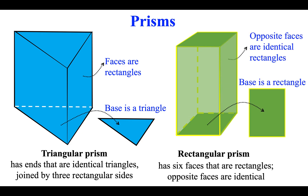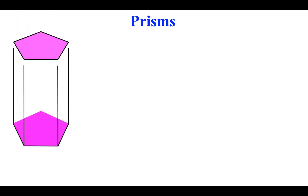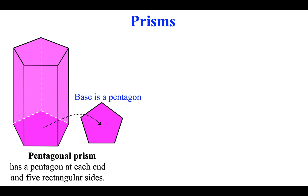Rectangular prism has six faces that are rectangles. Opposite faces are identical. Pentagonal prism has a pentagon at each end and five rectangular sides.